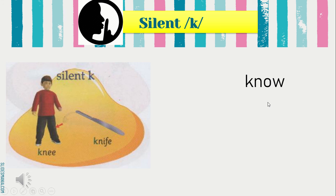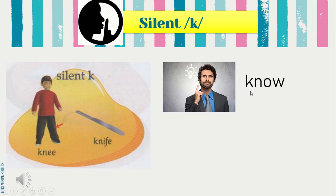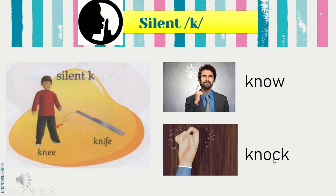Here is another example — we always see this word, and the letter K is silent. So we say it as 'know'. Next we have the word 'knock'. Bukan 'kknock' — it is 'knock'. Bunyi K di depan dia ni adalah tiada bunyi, senyap, silent. So it is 'knock'.